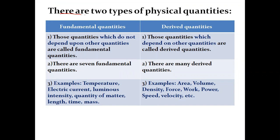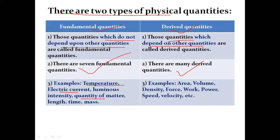There are two types of physical quantity: fundamental and derived. Fundamental quantities are those which do not depend upon other quantities, and there are seven fundamental quantities: temperature, electric current, luminous intensity, quantity of matter, length, time, and mass. Derived quantity examples include area, volume, and density.